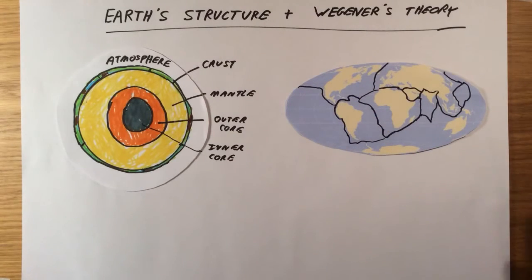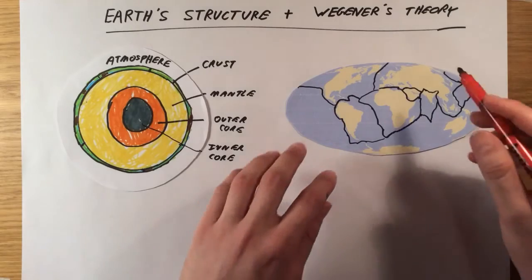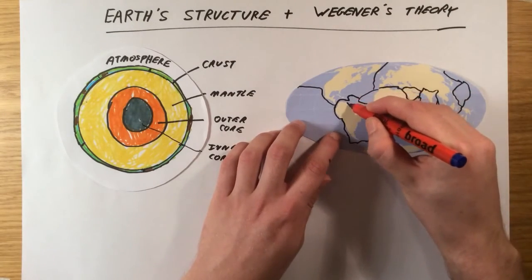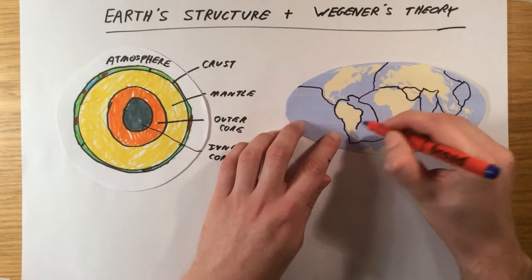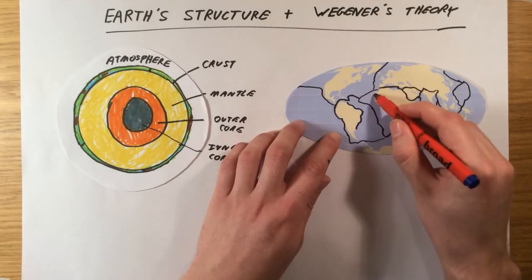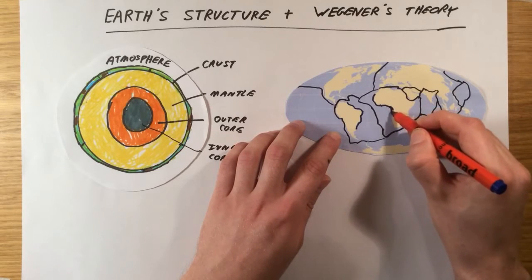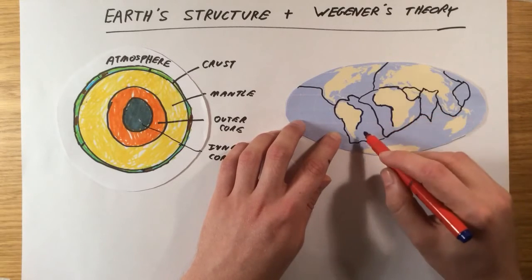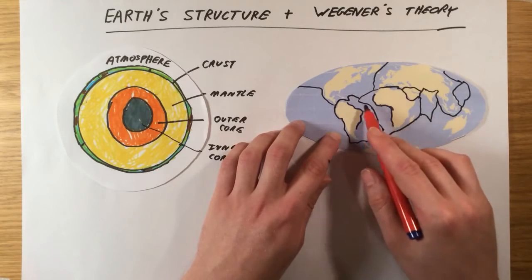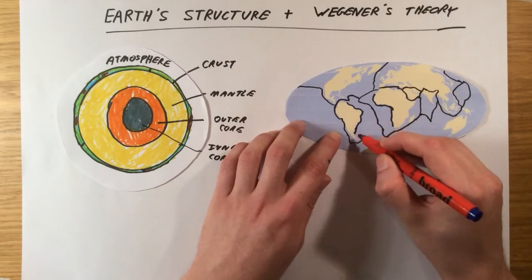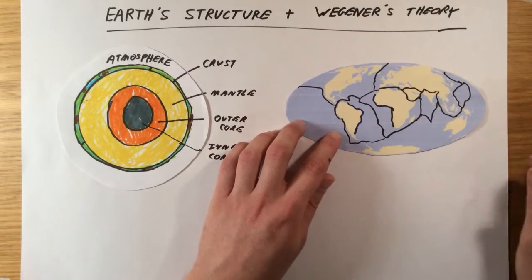The first person to actually notice some of the patterns which led to the discovery of these was a guy called Alfred Wegener. He spotted a few things. The first thing he noticed is that the edge of South America here looked almost like it could fit into the outline of Africa here, just a bit like a jigsaw puzzle. So he was quite intrigued by this and he also spotted some other similarities as well. He thought that maybe these two were at one point joined up.